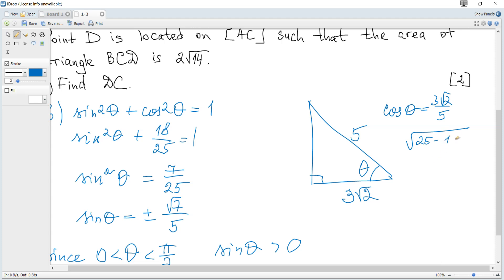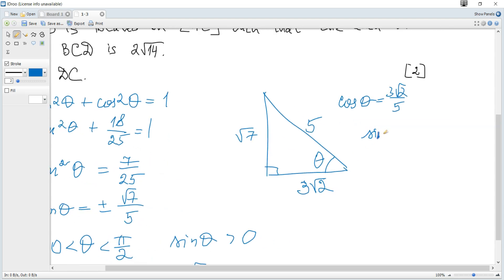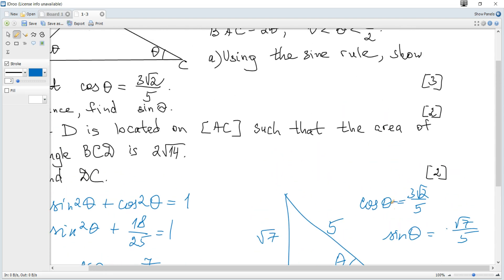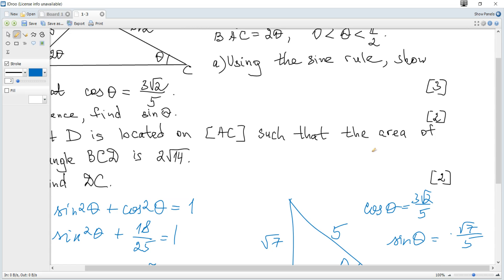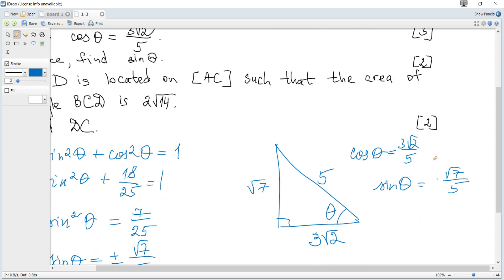Then, by definition, sine of theta is opposite over hypotenuse. Finally, we put sine as plus or minus according to the quadrant. Theta is from 0 to pi over 2, the first quadrant, and sine, cosine, and tangent are positive.